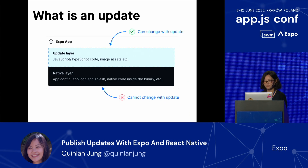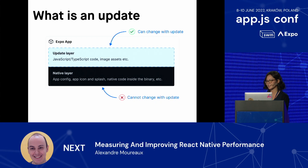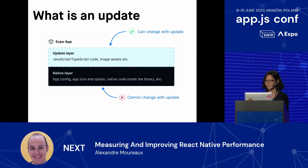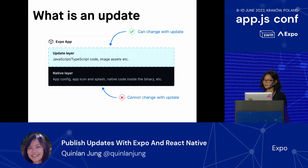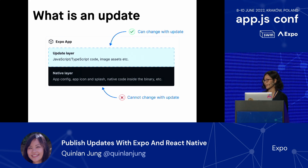So I'll quickly go over what exactly an update is. In any React Native app, we split everything into two main categories. The first is the update layer, which comprises your JavaScript and TypeScript code plus your image assets — typically everything that can change with an update. The second is the native layer, which is considered immutable: your app configuration, app icon, and most importantly all the native code inside your binary. This cannot be changed with an update — for any of this to change, you'll need an update from the App Store or Play Store.